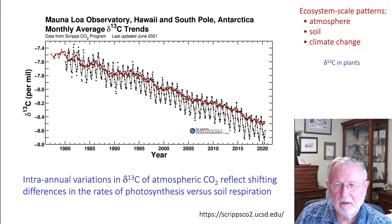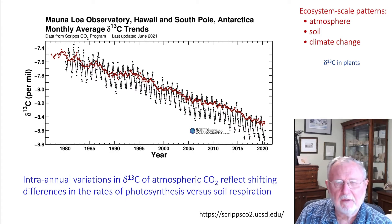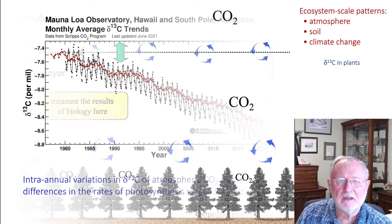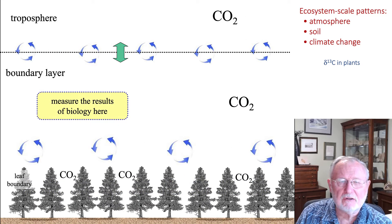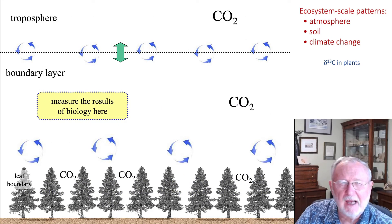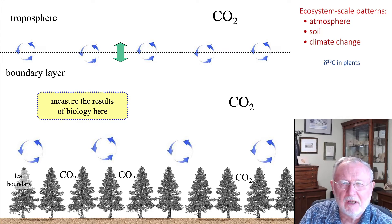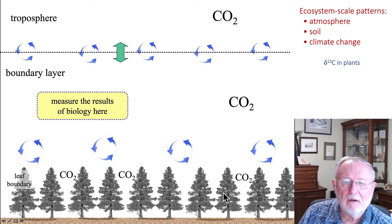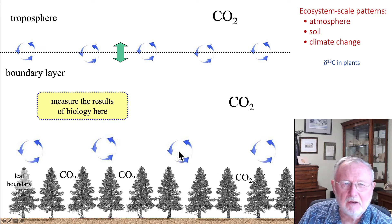So we see variations in the ¹³C of the atmosphere over the course of 12 months reflecting these two different processes. But over a period of days or so, we tend not to see changes. And so we can begin to use the atmosphere as a way to help us understand the processes taking place within the canopy — that is, we can use the boundary layer of air as a cuvette.